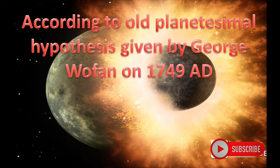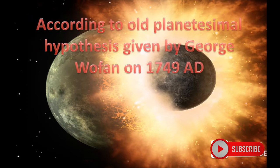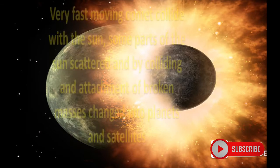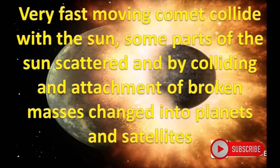According to the old planetesimal hypothesis given by George Wopin, a very fast moving comet collided with the sun. Some parts of the sun scattered, and by colliding and attachment of broken masses, changed into planets and satellites.